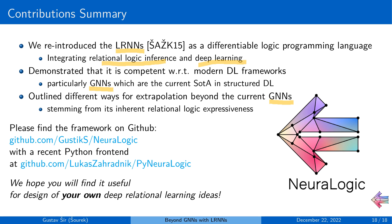So with that, I sincerely encourage you to check out the framework. It's called Neuralogic. You can find it on GitHub, either the backend or the Python frontend. And we hope that you will find it useful in designing of your own novel deep relational learning ideas beyond the GNNs.